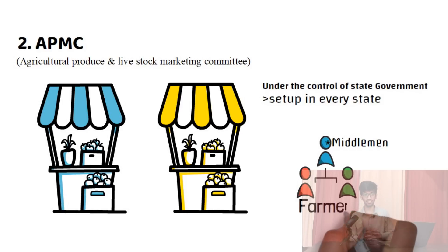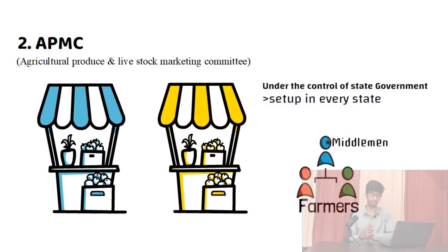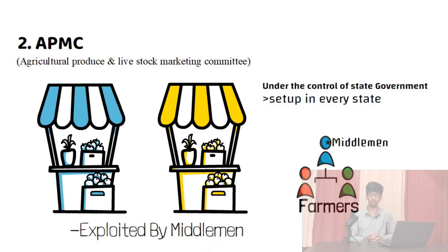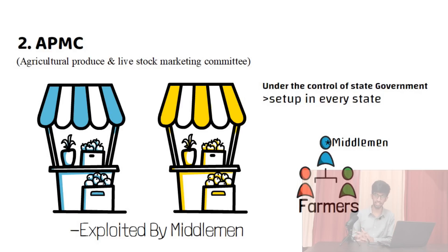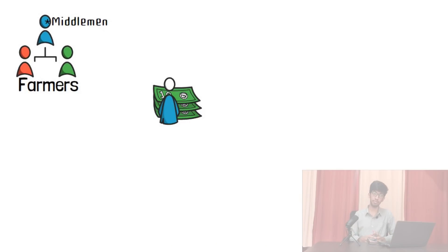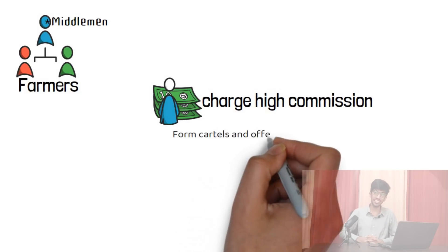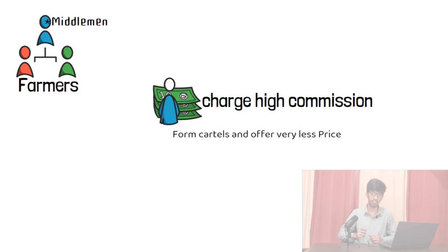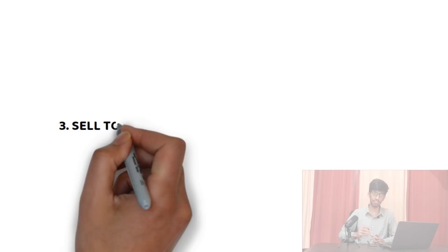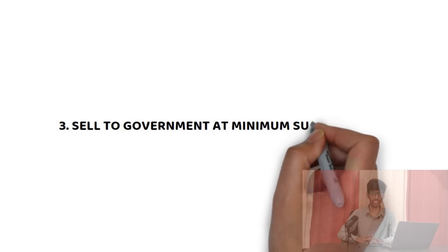In mandis, farmers couldn't directly sell to traders — instead they had to sell to middlemen, who in turn sold to the traders. Even in APMC, farmers were heavily exploited by these middlemen. The APMC mandi middlemen used to charge high commissions on the farmer's produce, and these APMC mandis used to form cartels and offer very low prices for the farmers' produce.